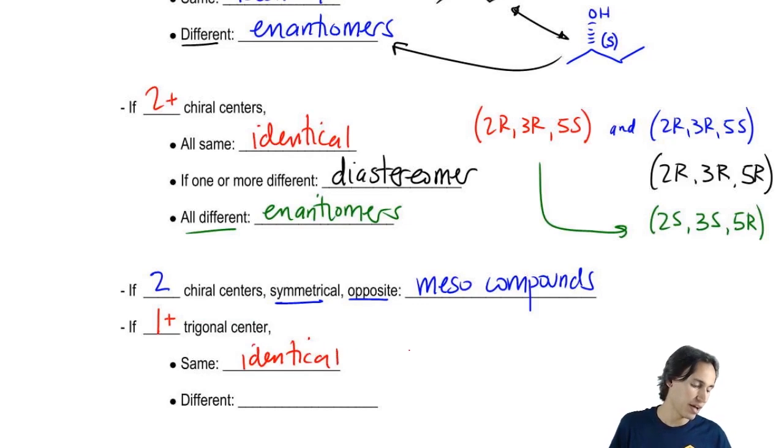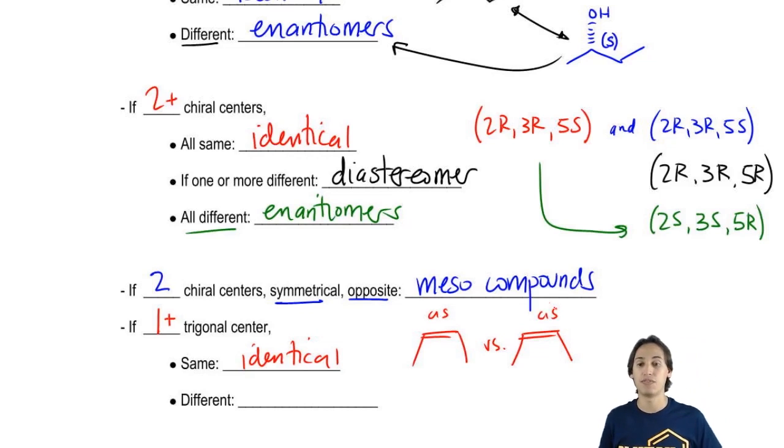So an example of that would be 2-butene versus 2-butene. Notice that I'm doing a cis and a cis and I'm comparing them. If they both have the same arrangement, cis or trans, then they're just going to be identical.